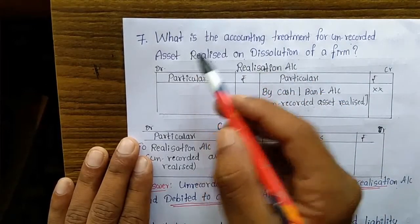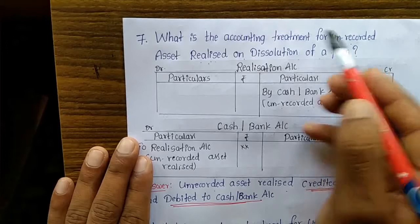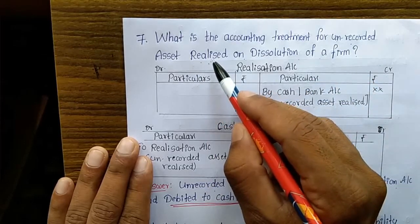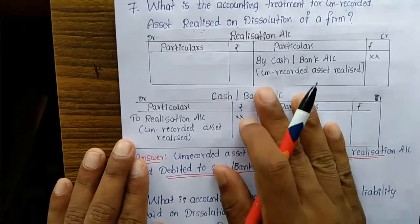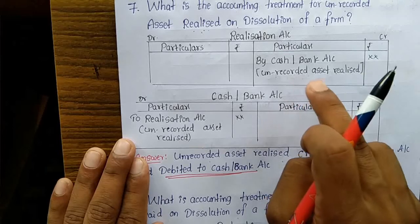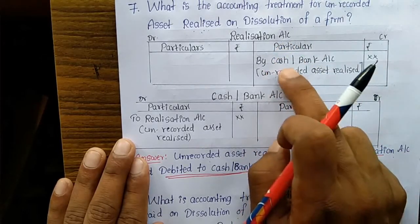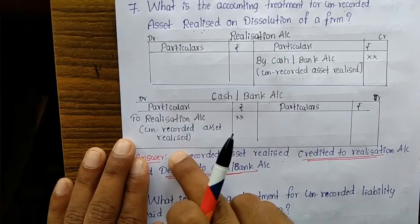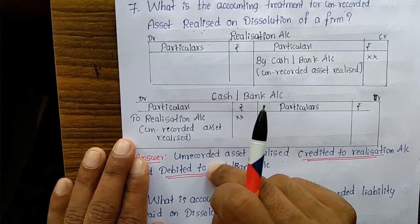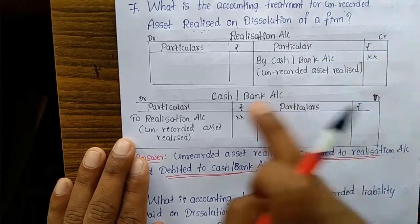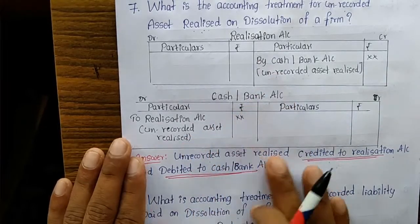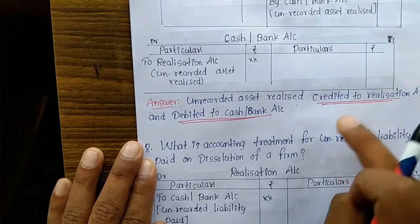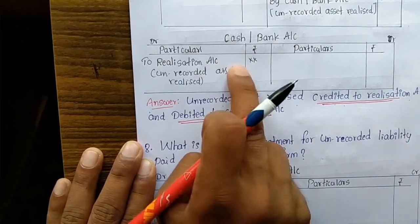Seventh question: what is the accounting treatment for an unrecorded asset realized on dissolution of a firm? When an unrecorded asset is sold or realized, the entry is: debit Cash or Bank Account, and credit Realization Account. That is, an unrecorded asset realized is credited to Realization Account and debited to Cash or Bank Account.